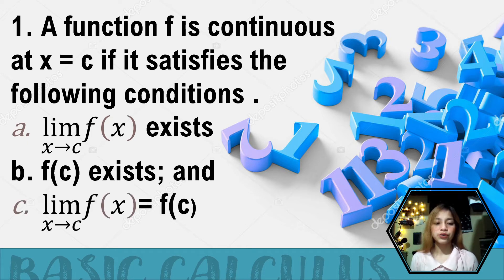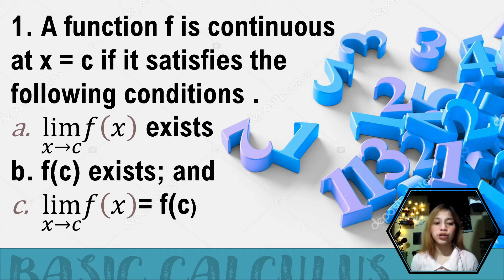The third condition: the limit of the given function must equal its value. So the value you get from condition a and condition b must be equal. If not, it does not satisfy the third rule, and therefore we can conclude that the function is not continuous.